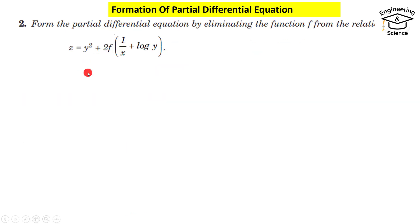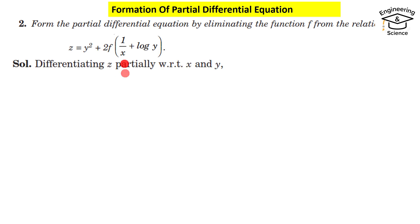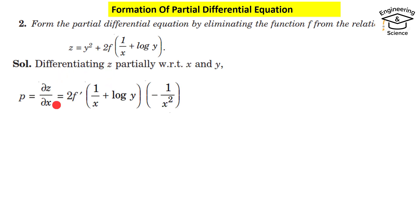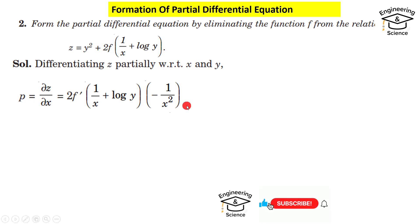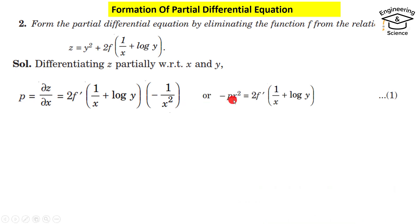This time, we have to eliminate the function f from the relation to form the partial differential equation. Differentiating with respect to x, we get 2f prime of (1 over x plus log y) times minus 1 over x squared. Multiplying both sides by minus x squared, we get minus px squared equal to 2f prime of (1 over x plus log y). That is equation one.